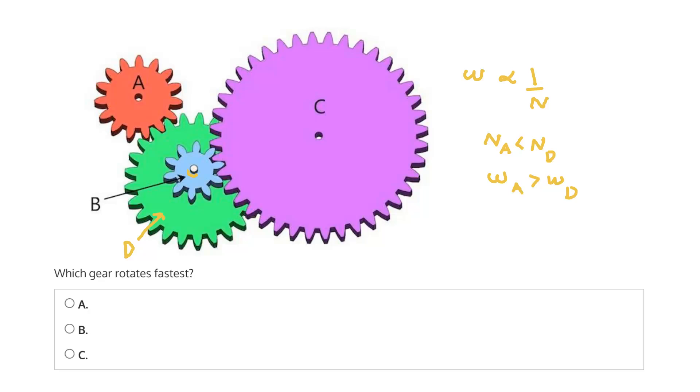And we can see that gear B is connected to the same shaft as gear D, which means the rotational speeds of gears B and D will be the same. And if we know that the rotational speed of A is greater than that of D, then we also know that the rotational speed of A is greater than that of gear B.